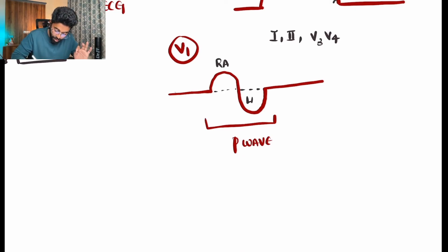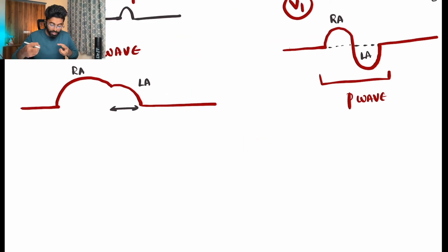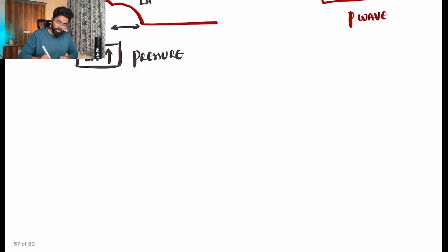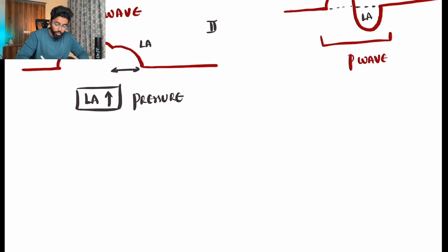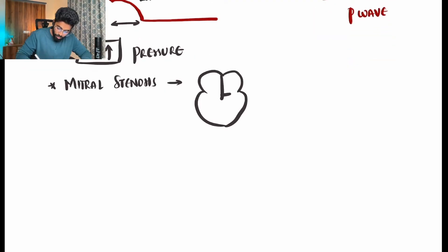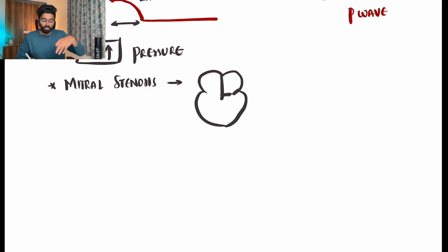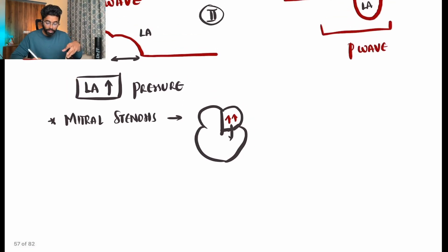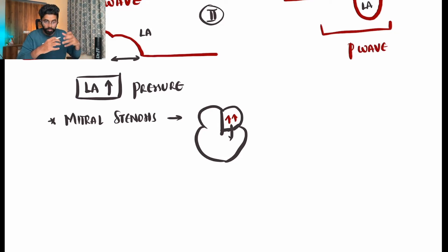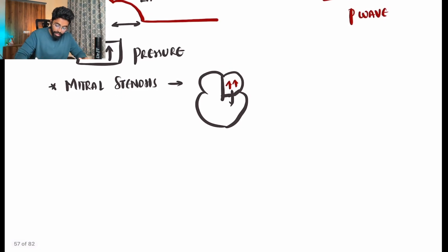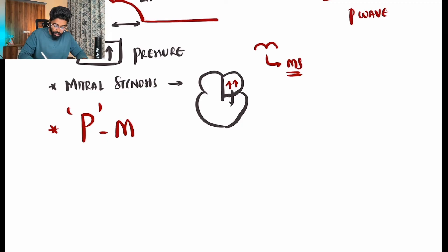In lead V1, the upper part of the P wave belongs to the right atrium and the lower part to the left atrium. A prominent lower part in V1 indicates increased left atrial pressure. A classic condition causing this is mitral stenosis, where the narrow mitral orifice restricts blood flow from left atrium to left ventricle, raising left atrial pressure.